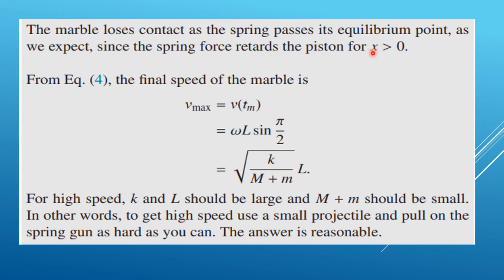The marble loses contact as the spring passes its equilibrium position, since the spring force decelerates the piston for x > 0. The final speed of the marble is v_max = v(t_m) = ωL sin(π/2) = ωL. Substituting ω = √(K/(M + m)), the final speed is v_max = L√(K/(M + m)). This is the speed of the marble when it just loses contact with the piston at the equilibrium point.